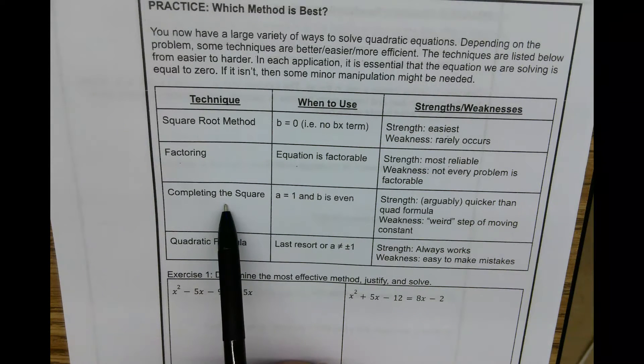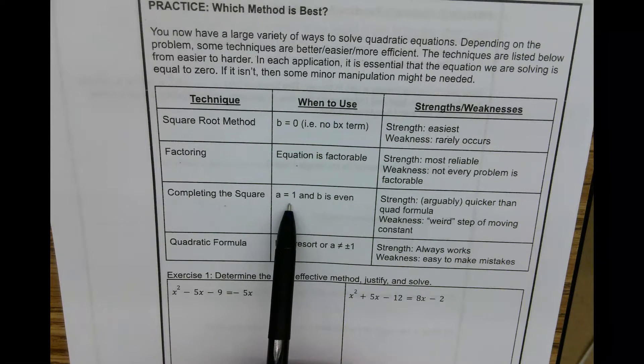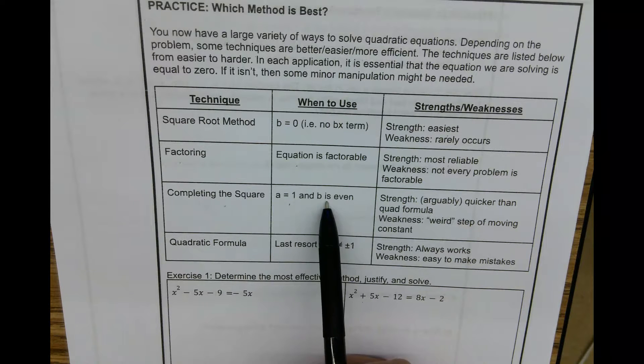Next is completing the square. When would you use it? I would probably only use it when a equals one. And definitely, b has to be even. If it's not, if b is odd, when you do that divide by two and square it, you're going to get that fraction there, which most of us don't really like.